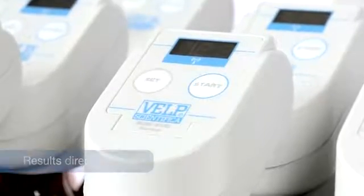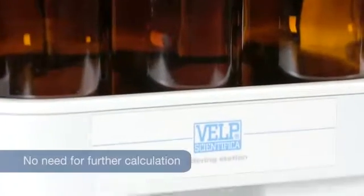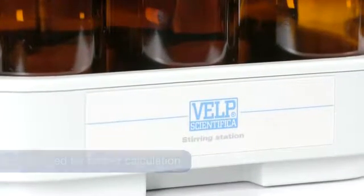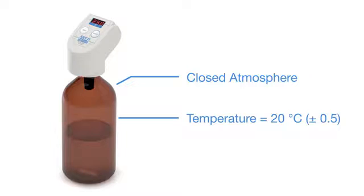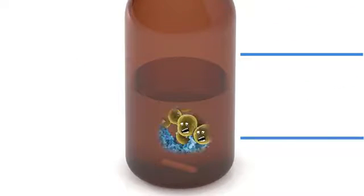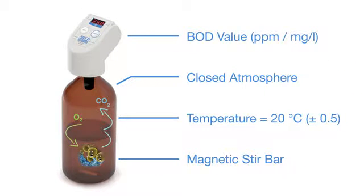The VELP Sensor measures the BOD value directly in milligrams per liter with no need for further calculation. It uses the respirometric method in a closed atmosphere at a constant temperature of 20 degrees centigrade and with gentle sample stirring. The measuring principle consists of determining the oxygen concentration at the beginning and end of a measurement period.